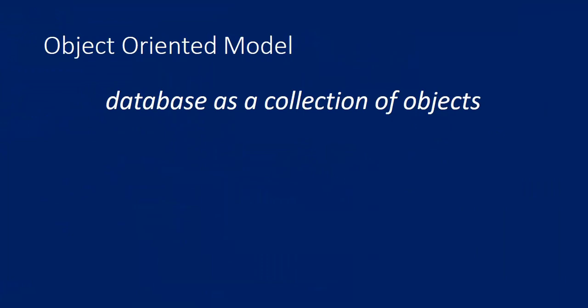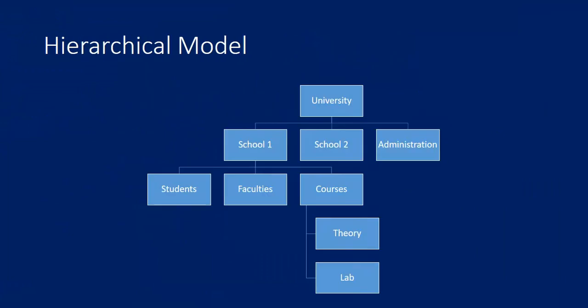In the object oriented model, the database is a collection of objects. For example, a software database might store components such as media, code, emails, audio, video, and XML files. If a database stores all these objects for a software system, we call it an object oriented model.